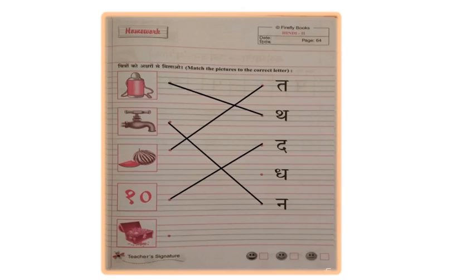So, in Hindi it is known as Dhan. Dha, Dha, Dhan. And where is Vyanjan Dha on right hand side? It is just above N. So, let us match Vyanjan Dha with the picture of Dhan.